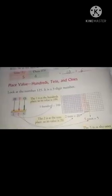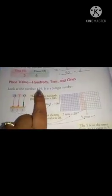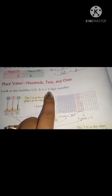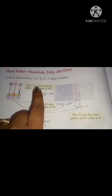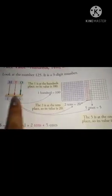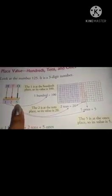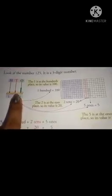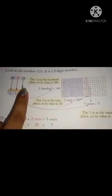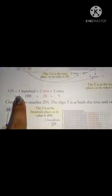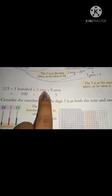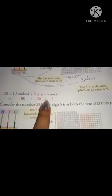Now, we will write place value. Place value. Hundreds, tens and ones. Look at the number 125. It is a three digit number. So, 125. How do we show it on the spike? The one is at the hundreds place. So, its value is 100. One, which is 100 plus 2 tens plus 5 ones. 100 plus 20 plus 5.